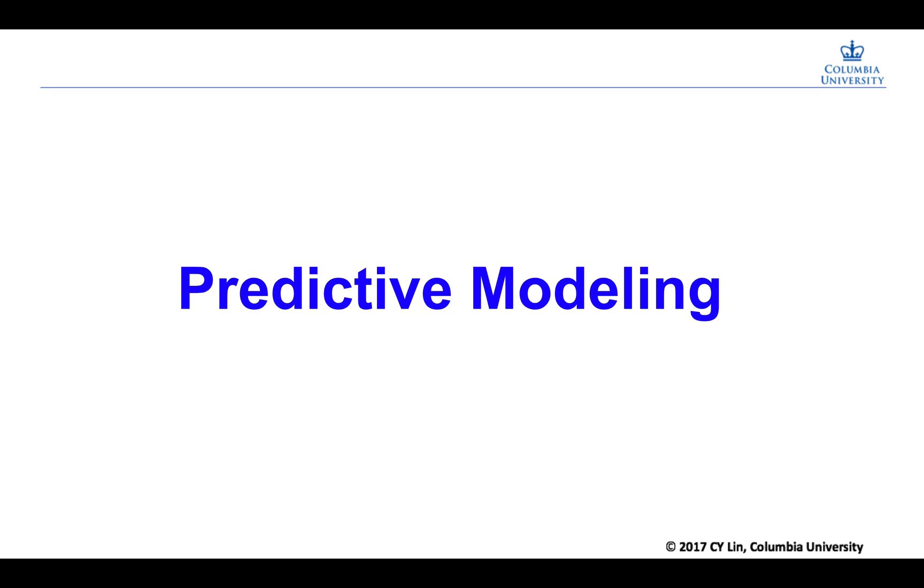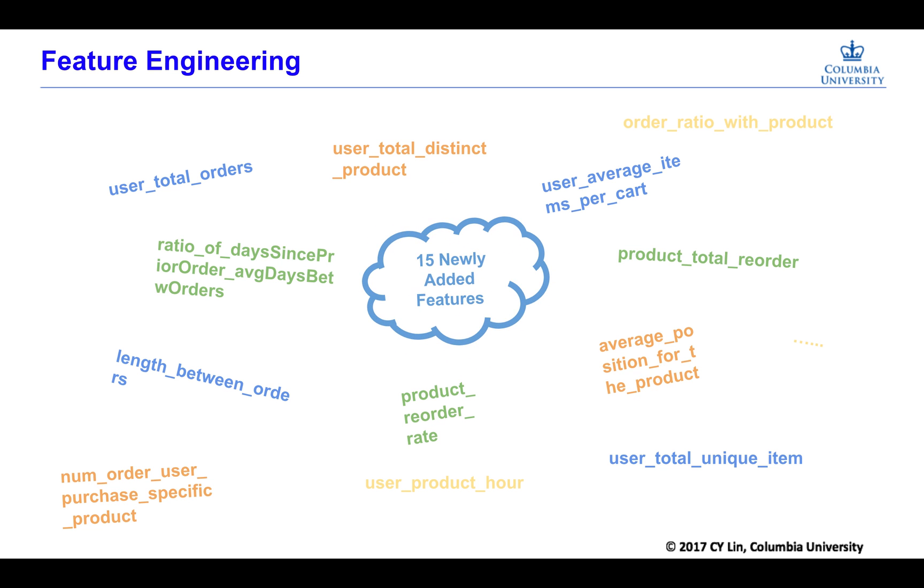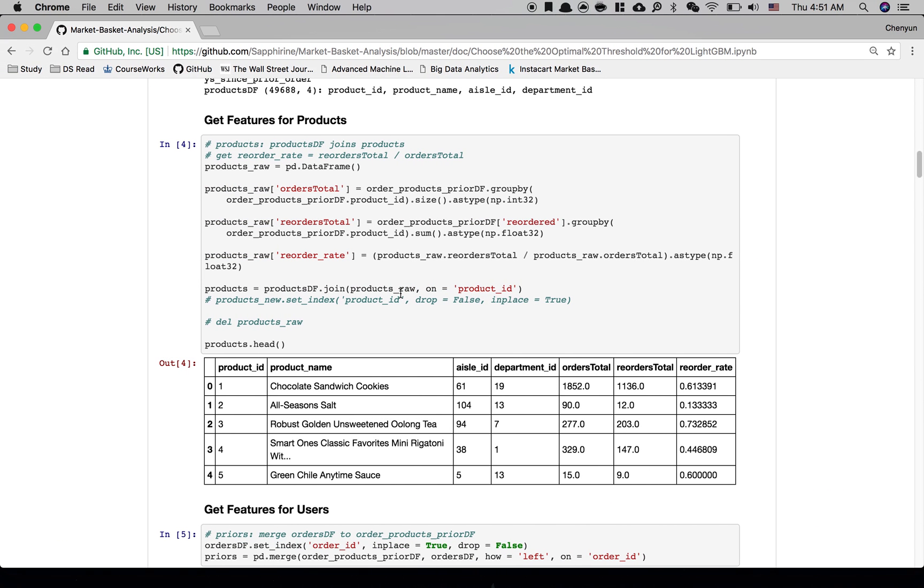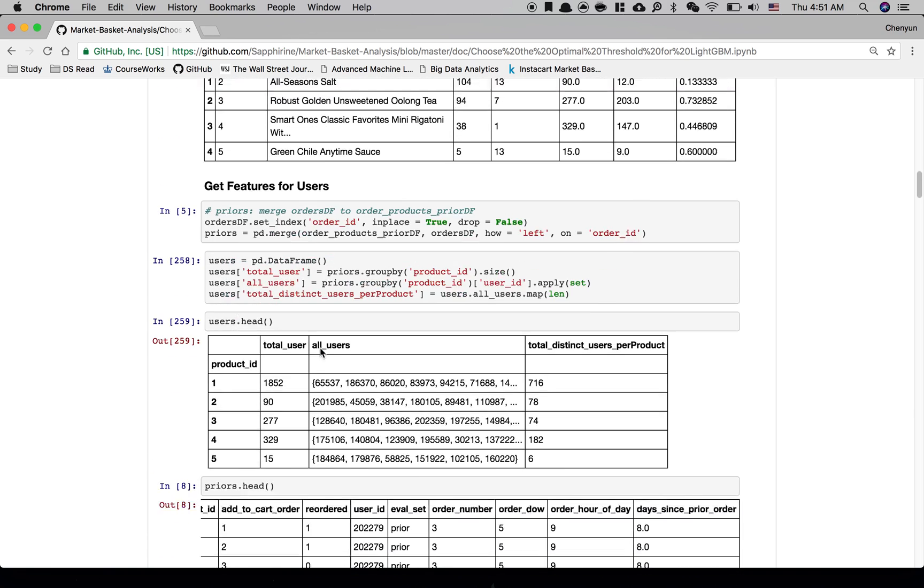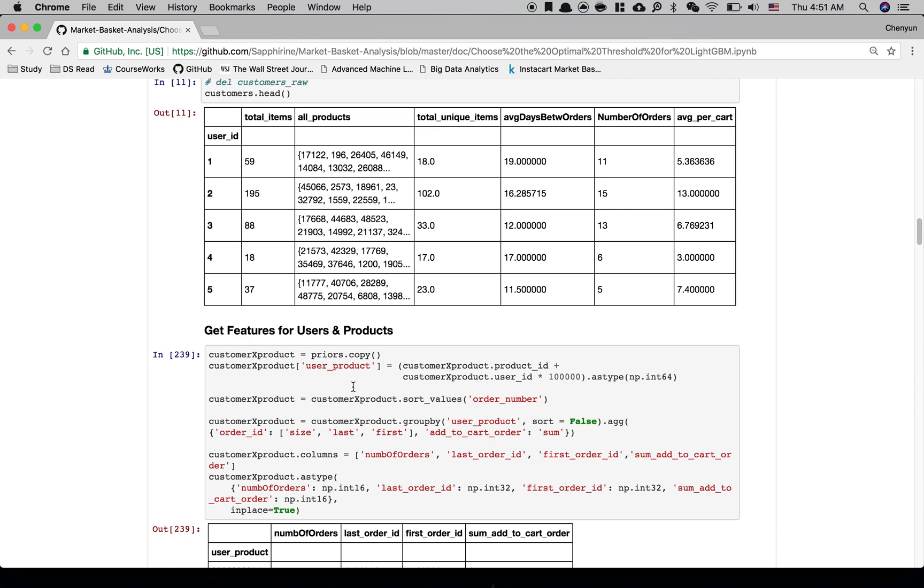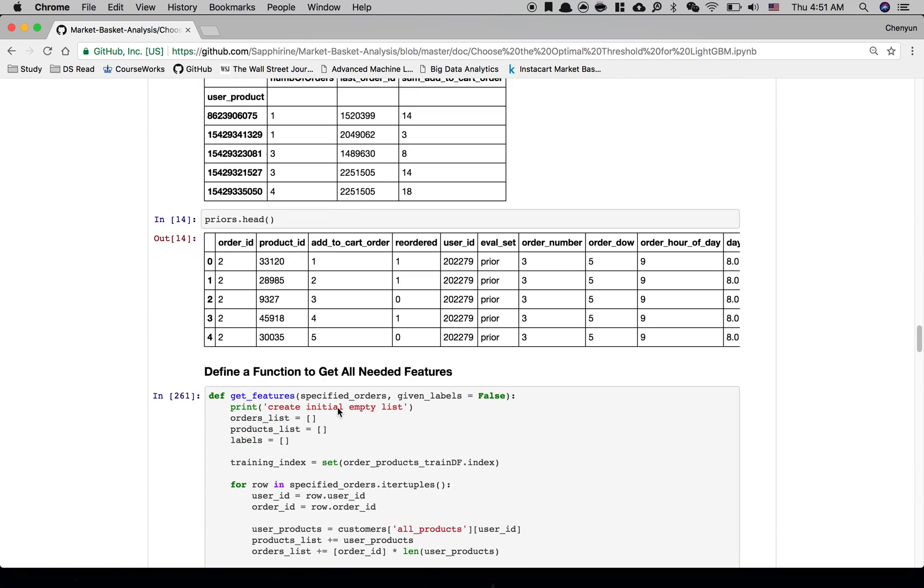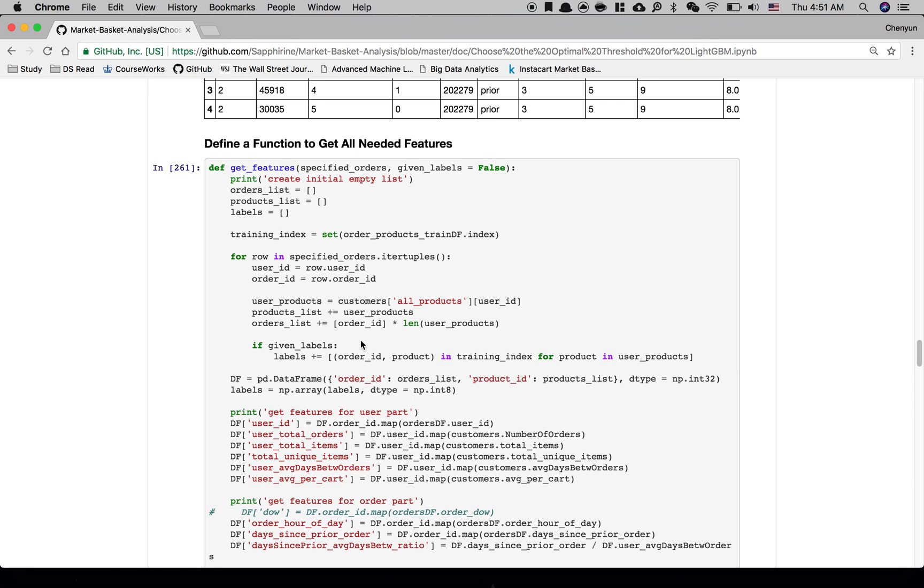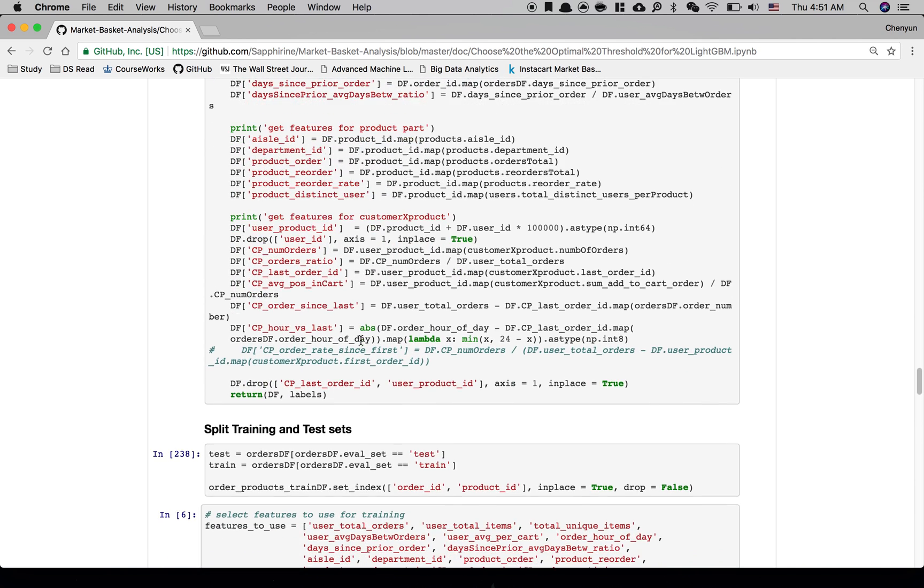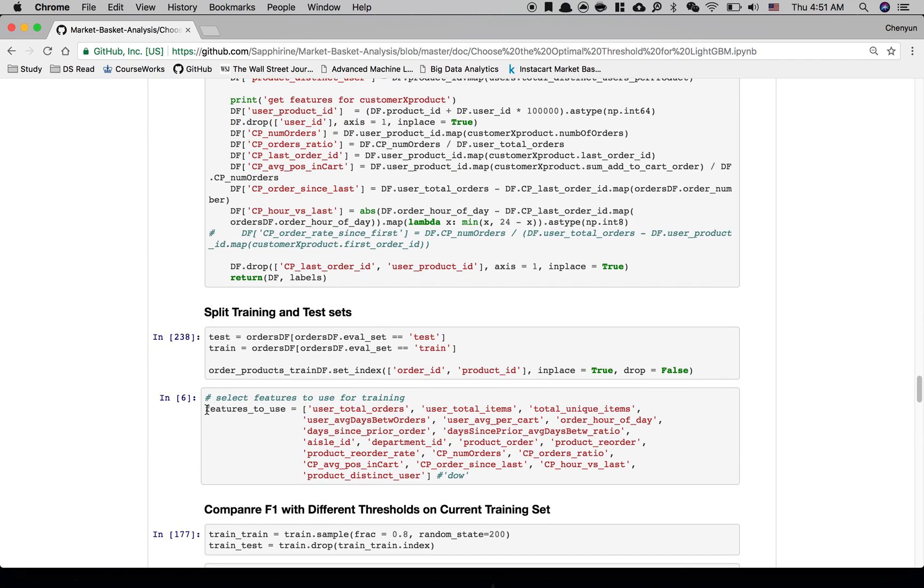Let's now talk about predictive modeling. We first create 15 new features. The way we did this is that we first get features for products, for users, and products. Then we define a function that can retrieve all the features we calculated. So when we need to train the models, we can just create a feature to use list to select the important features we need to apply. Here, day of week is a feature that we didn't use, so we just comment it out.